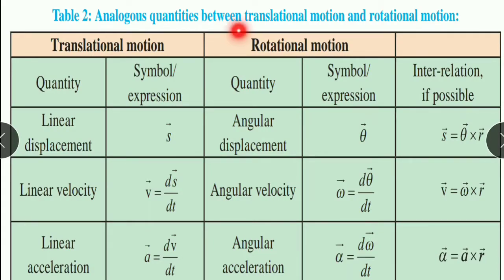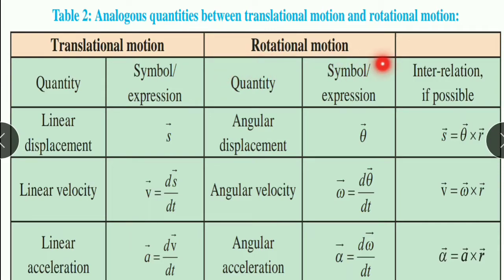Now let us compare translational motion and rotational motion. In translational motion, particles travel along a straight line; in rotational motion, the object is rotating or circulating. In translational motion, we discuss linear displacement (unit: meter). Differentiating with respect to time gives velocity, and differentiating velocity gives acceleration. Similarly, in rotational motion we discuss angular displacement. The rate of change of angular displacement is angular velocity, and the rate of change of angular velocity is angular acceleration.